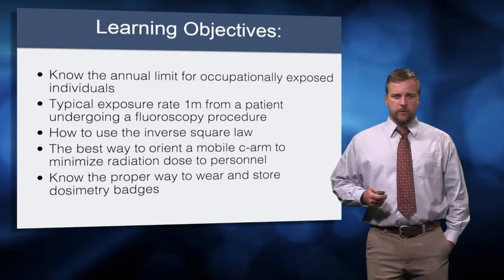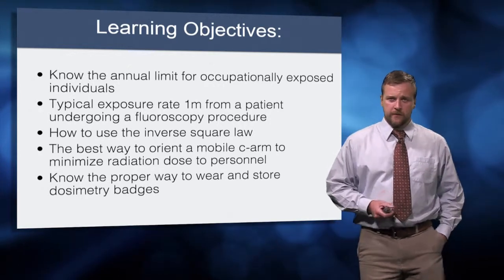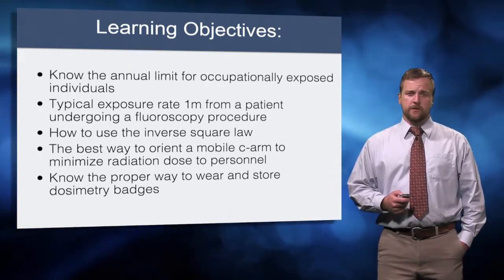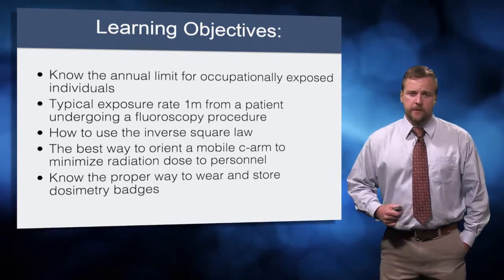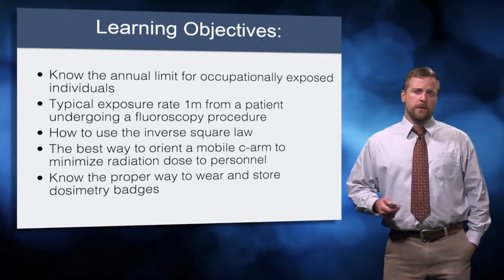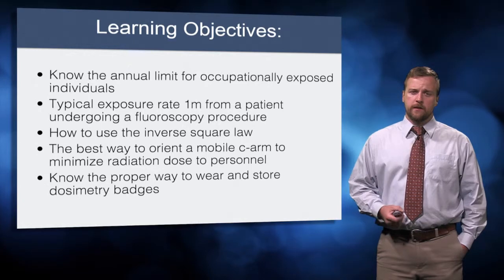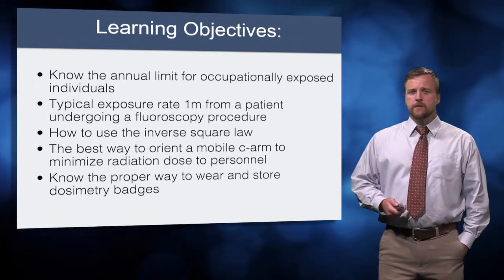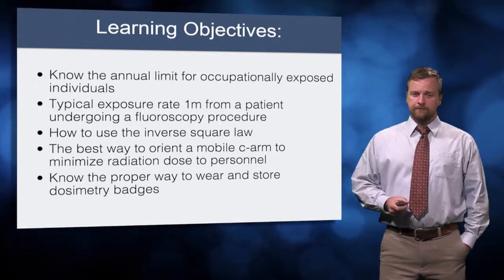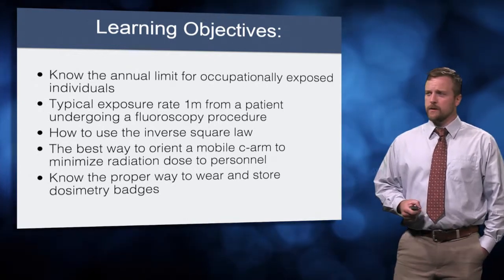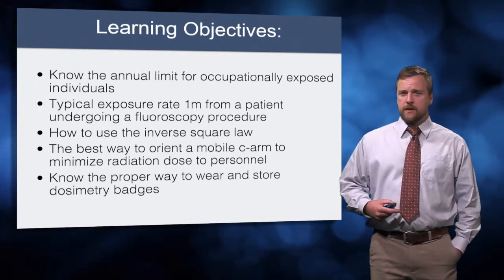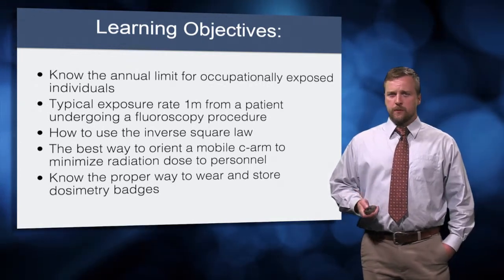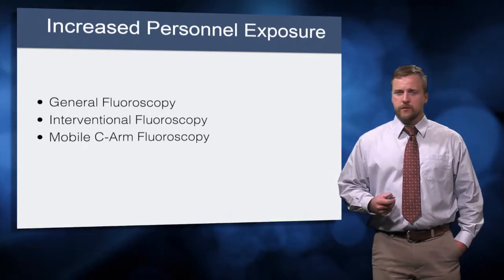The learning objectives for this course — things I'd like you to take away from it — are the annual limits for occupationally exposed individuals, the exposure rate typically at one meter from a patient undergoing a fluoroscopy procedure, how to use the inverse square law, the best way to orient a mobile C-arm to minimize radiation dose to yourself and other personnel, and how to properly wear and store dosimetry badges.